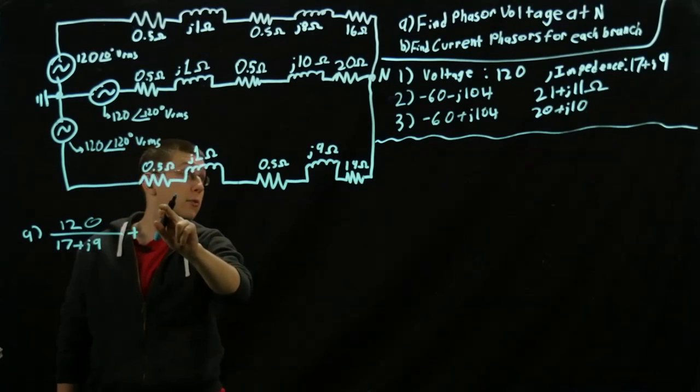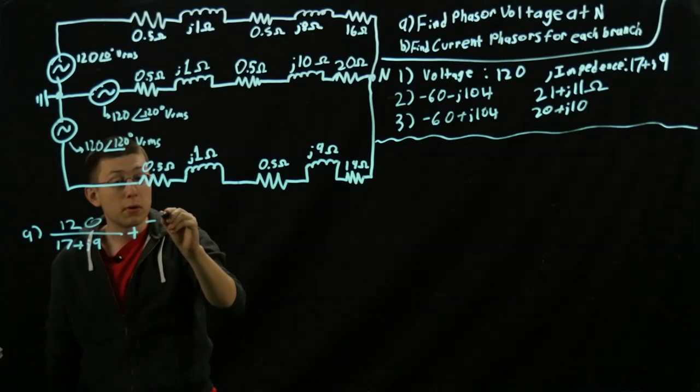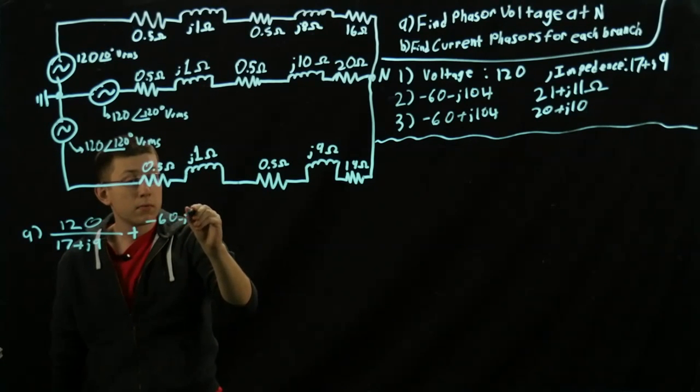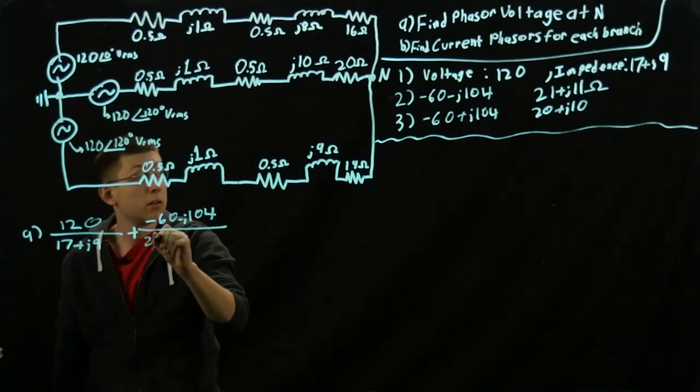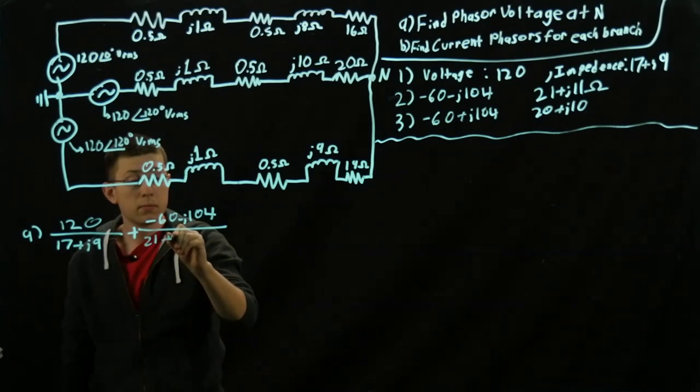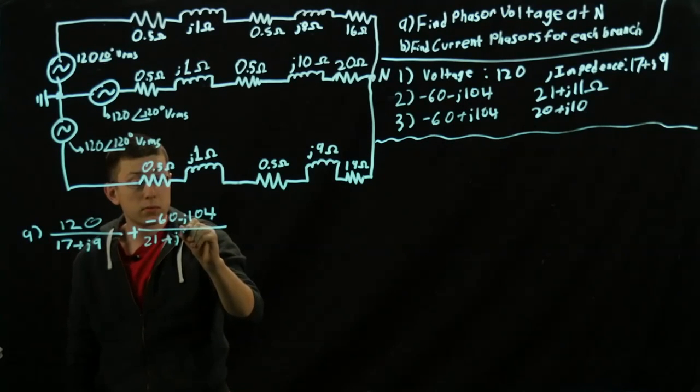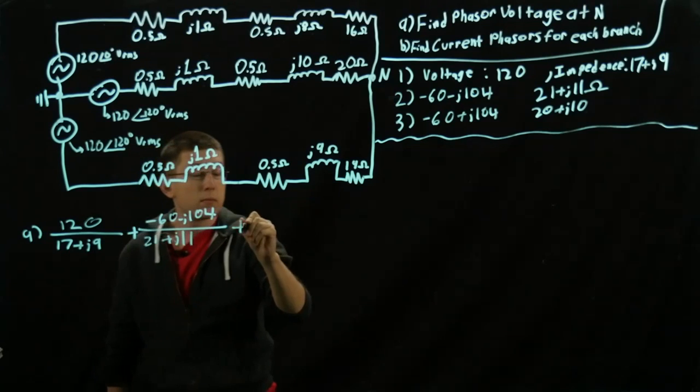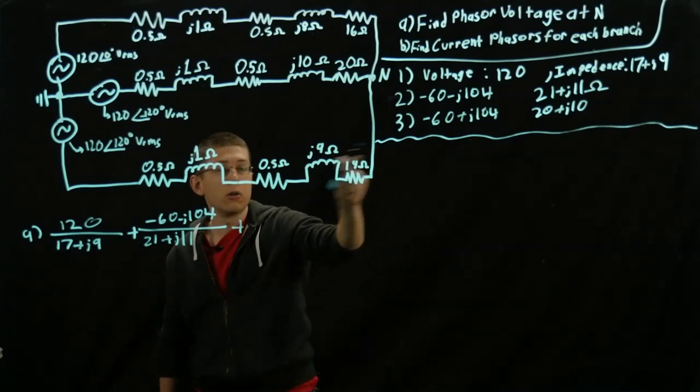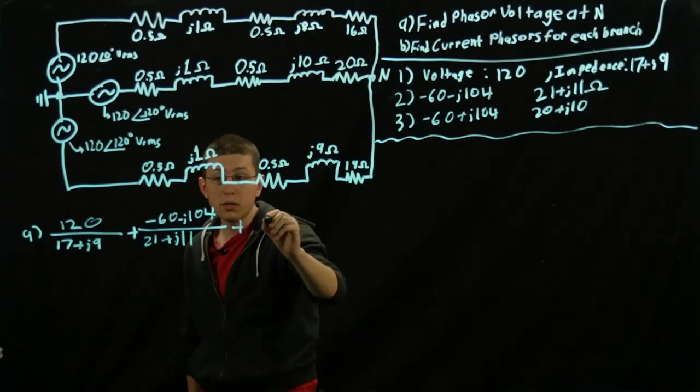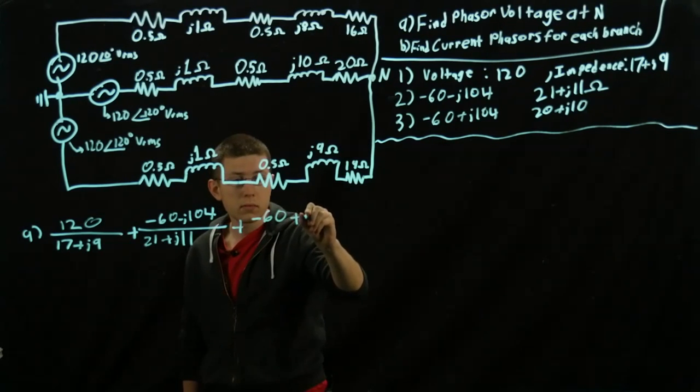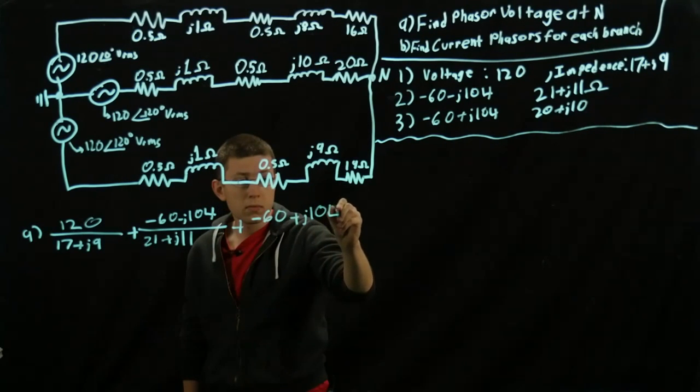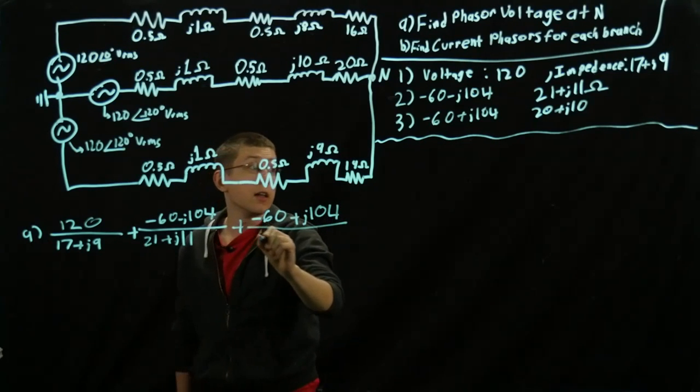Plus our next one, so negative 60 minus J104 over 21 plus J11. And then our last one, negative 60 plus J104 over negative 20 plus J10. And that last impedance.